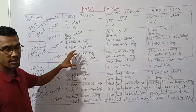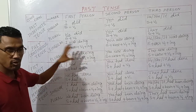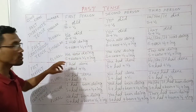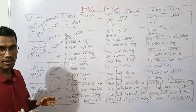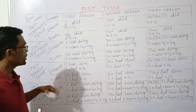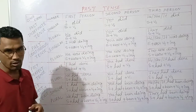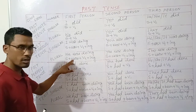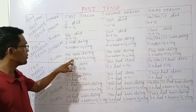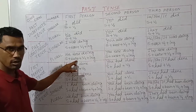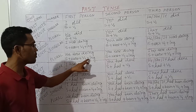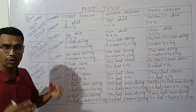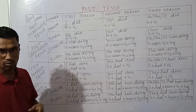For first person plural 'we': subject plus 'were' plus verb first form plus '-ing' plus object — 'We were doing our homework.' The sentence structure is: subject plus 'were' plus verb plus '-ing' plus object.